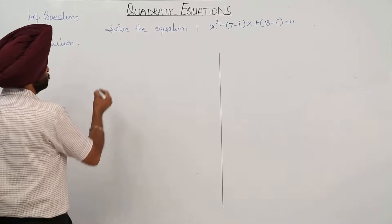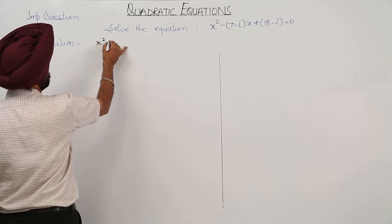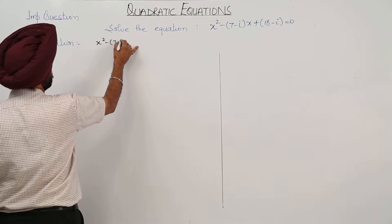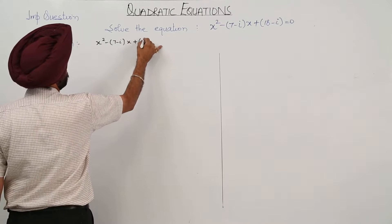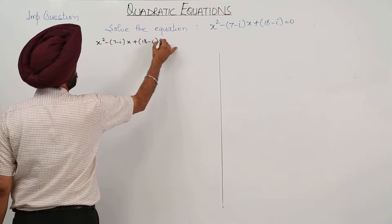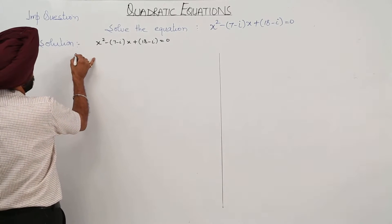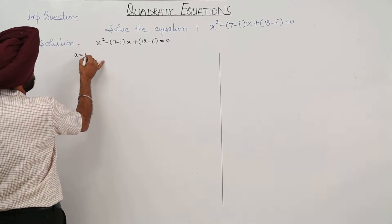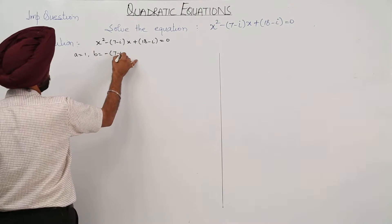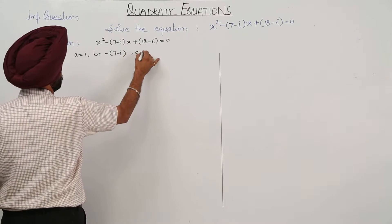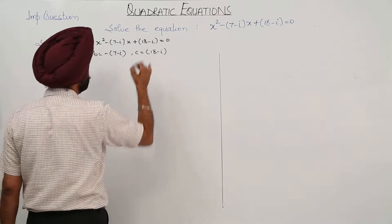Let's solve the equation x² - (7 - i)x + (18 - i) = 0. Here a = 1, b = -(7 - i), and c = 18 - i.